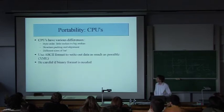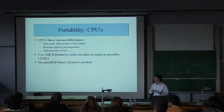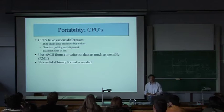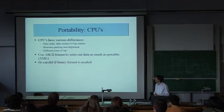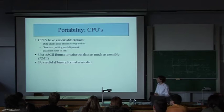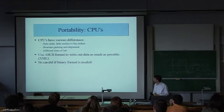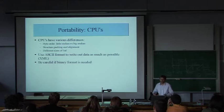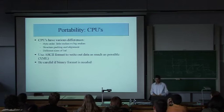For CPUs, you have to account for byte order — little endian versus big endian — how integers are represented, structure packing and alignment, and different sizes of int, for example 64-bit versus 32-bit processors. To solve packing and endianness, we use as much ASCII format for saving data as possible. But of course you can't do that all the time — images, for example, have to be stored in binary, and then you have to be careful.